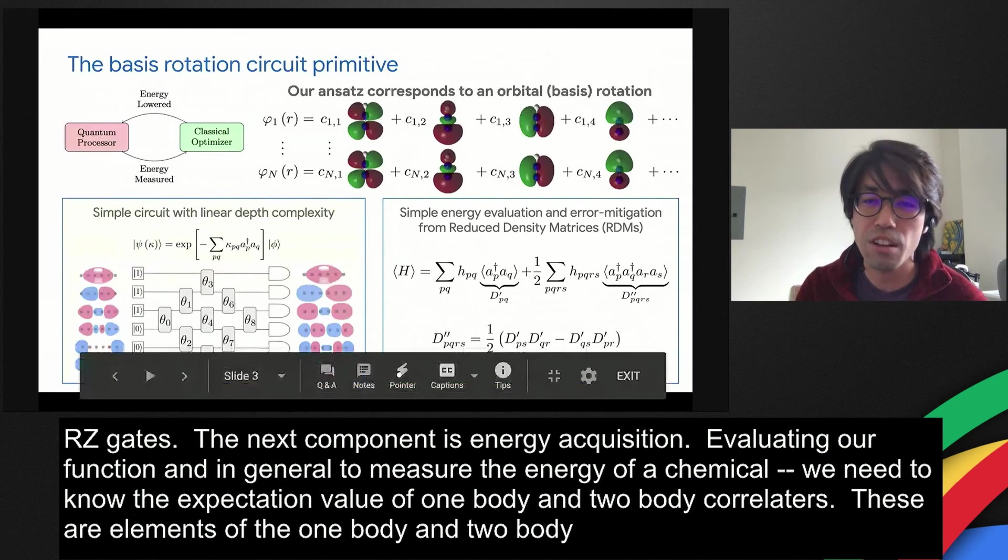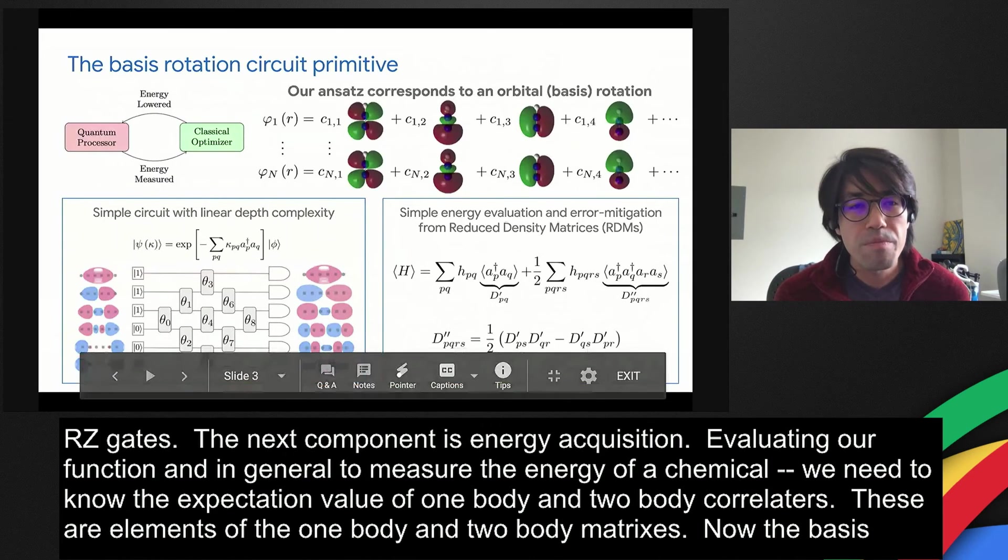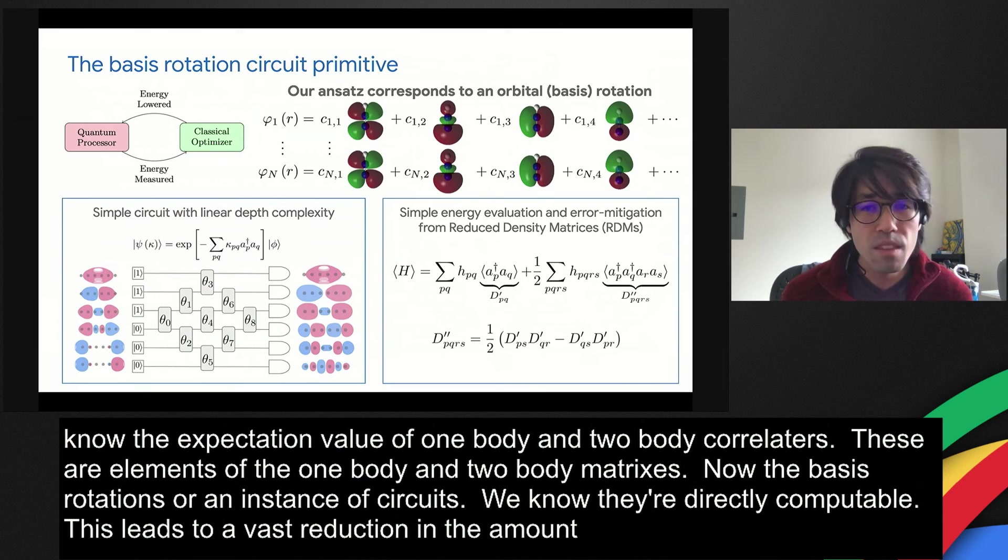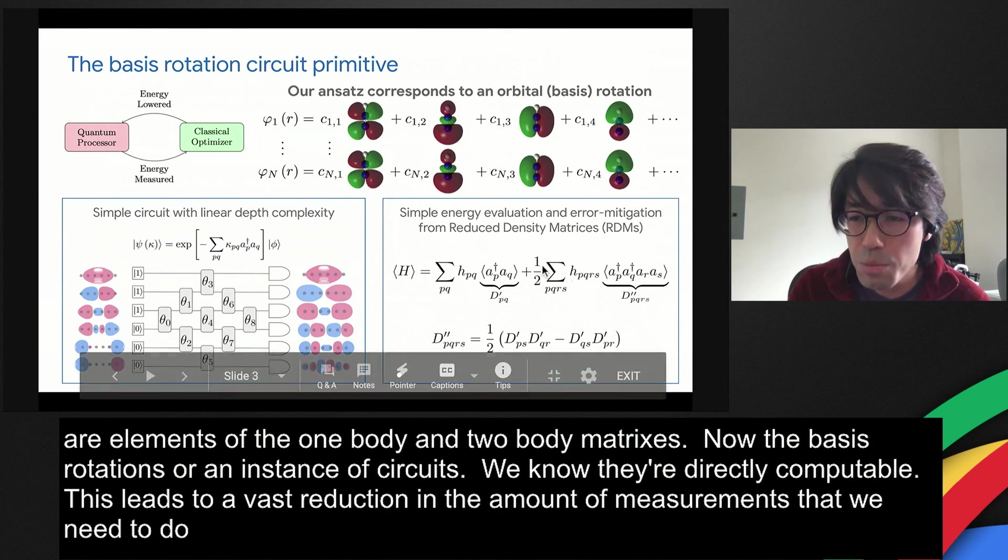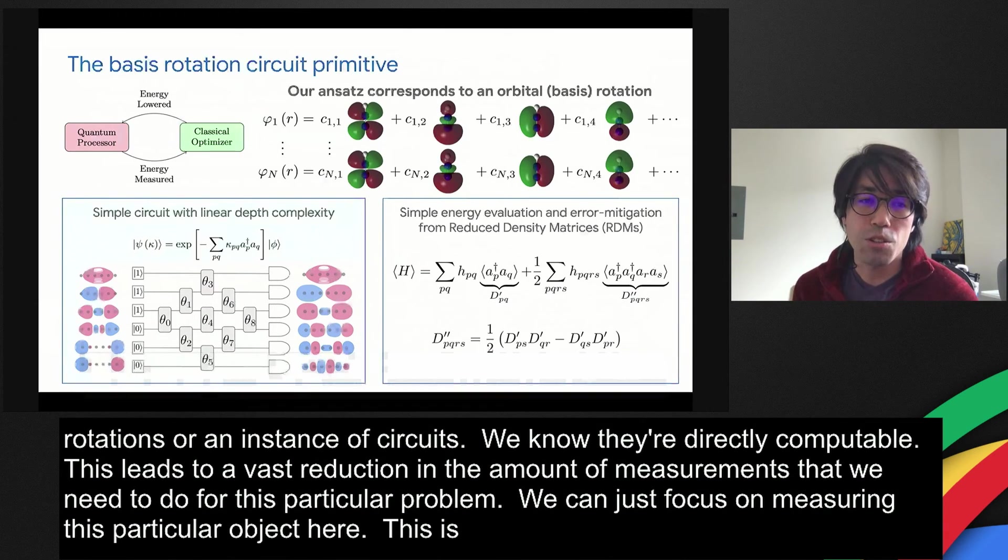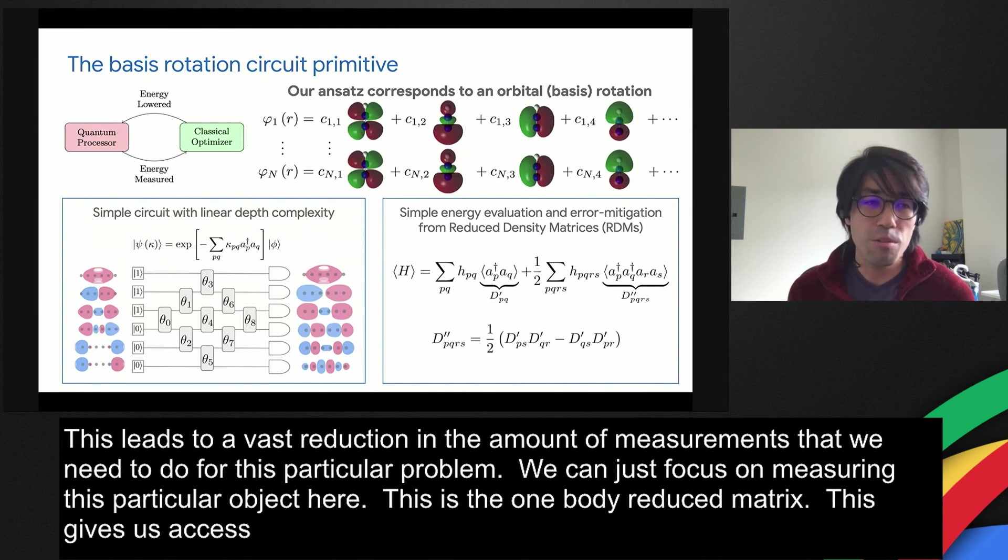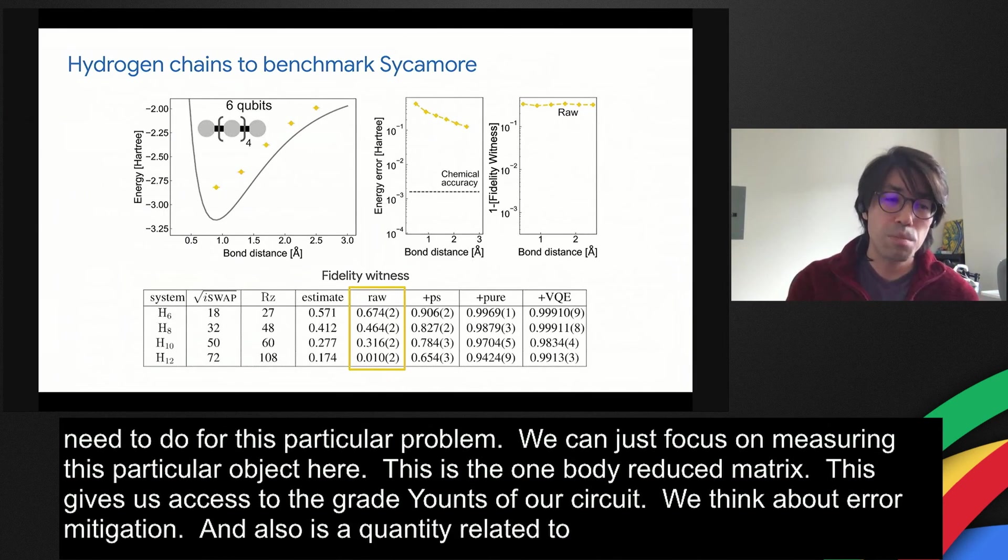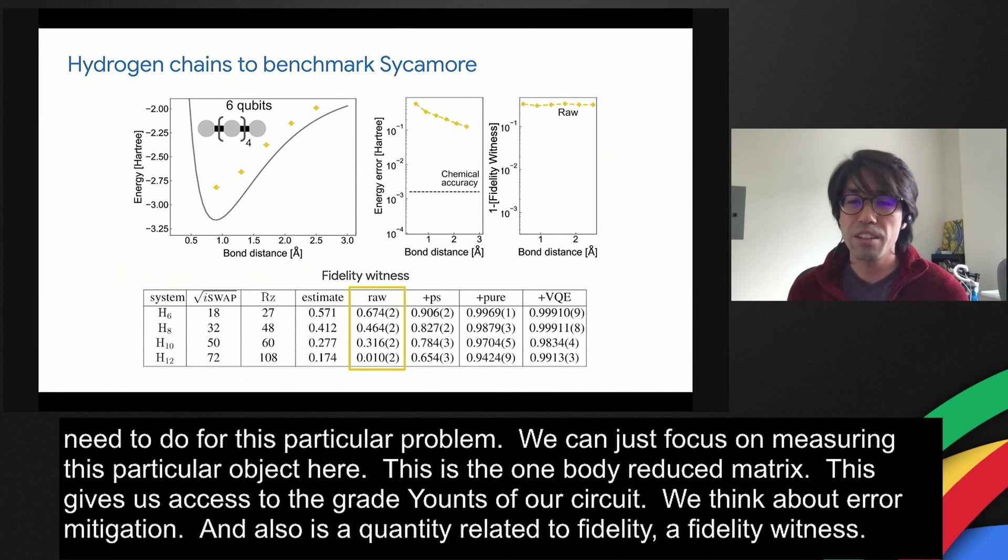The basis rotations are an instance of fermionic Gaussian circuits. We know for fermionic Gaussian circuits that higher-order moments are directly computable from the second-order moment. This leads to a vast reduction in the amount of measurements that we need to do for this particular problem. We can just focus on measuring this particular object here, the one-body reduced density matrix. This gives us access to the gradients of our circuit, lets us think about error mitigation, and also gives us a quantity that's related to fidelity, a fidelity witness.